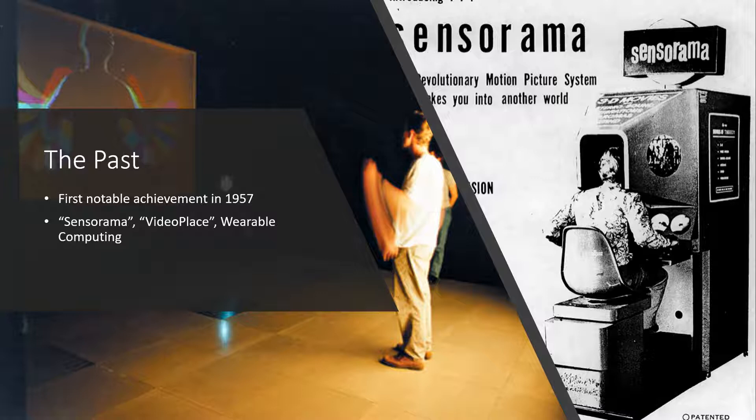Steve Mann, a computational photography researcher, gave the world wearable computing in 1980. The first properly functioning AR system was likely the one developed by Louis Rosenberg in 1992, called Virtual Fixtures, which was designed to compensate for the lack of high-speed 3D graphics processing power in the early 90s.